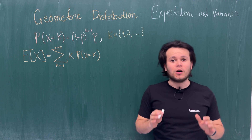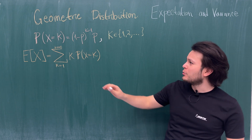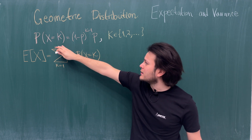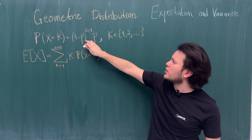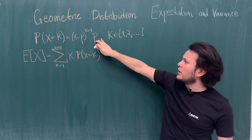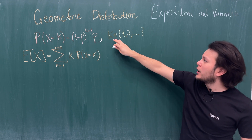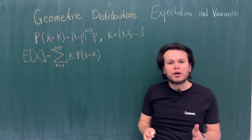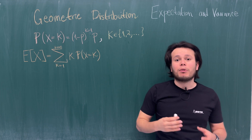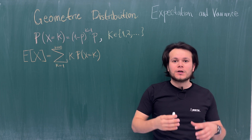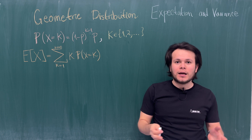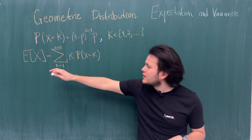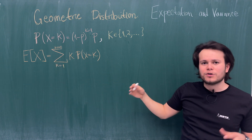Let's find the expected value and variance of the geometric distribution. We have a random variable x whose PMF is P(x = k) = (1-p)^(k-1) · p, where k is any natural number greater than or equal to 1. As you remember, the geometric distribution is the probability that the first success in a Bernoulli trial happens at time k.